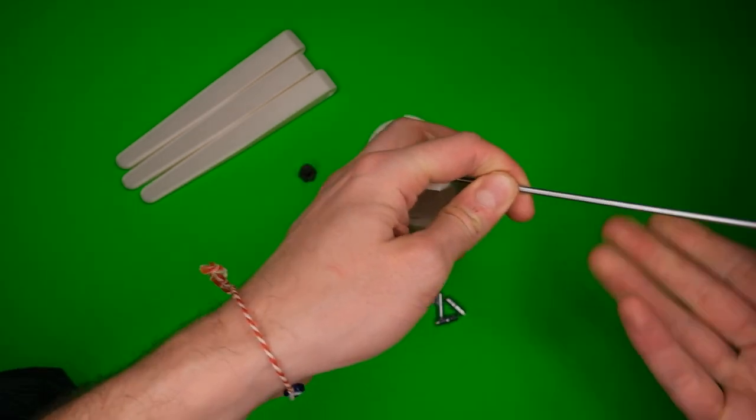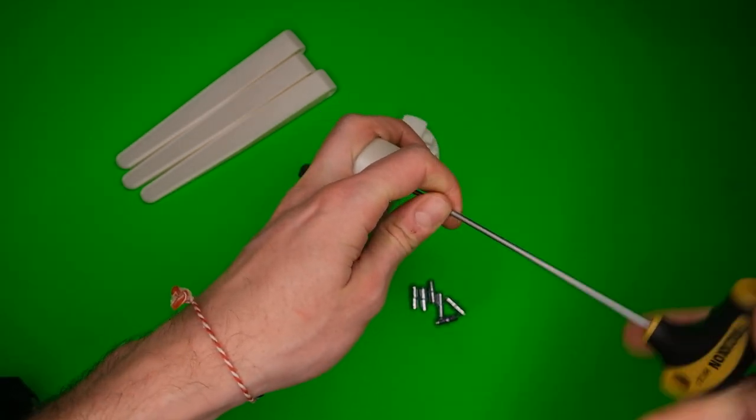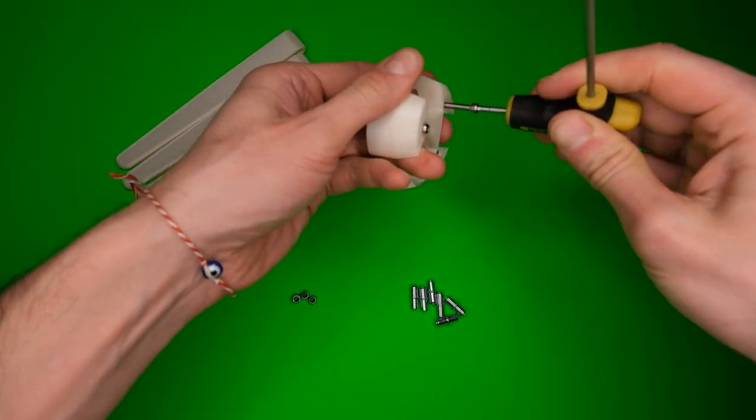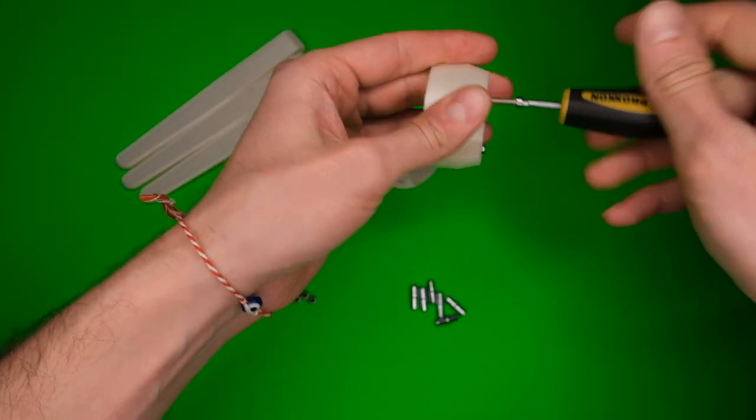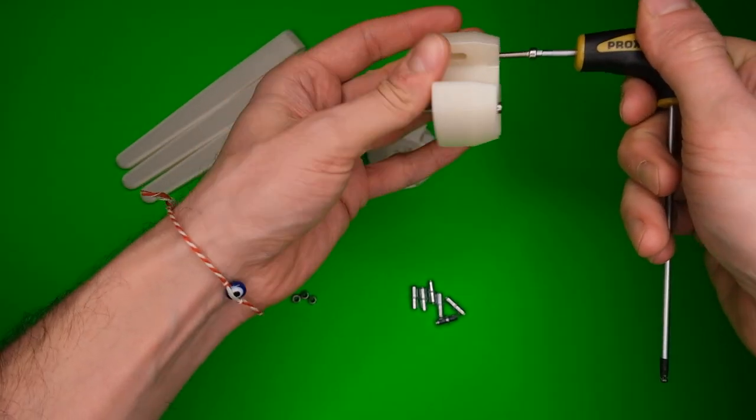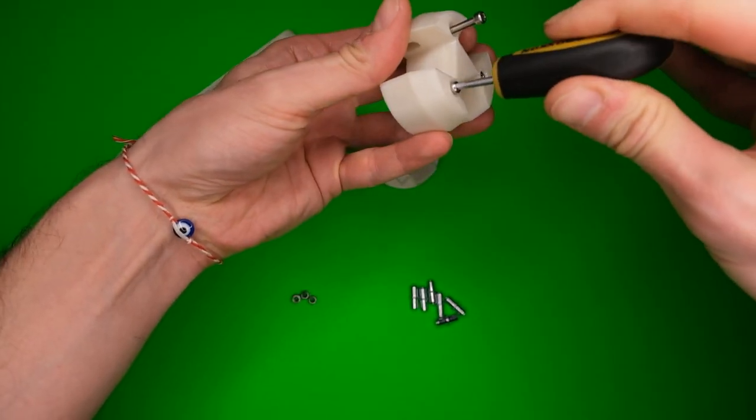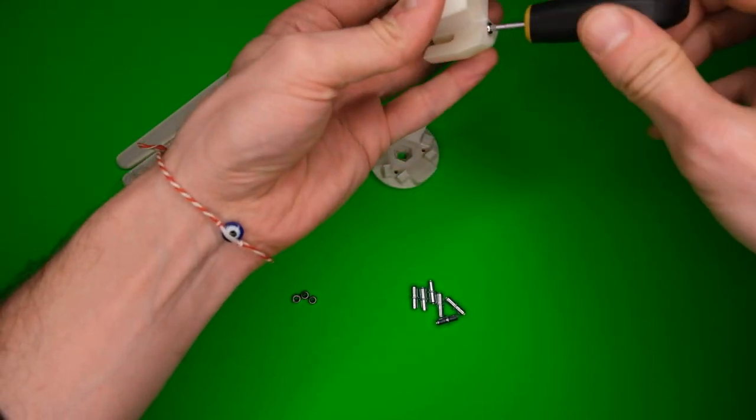Sometimes the holes are a little bit tight and if you've got a reamer you can just size them up correctly. This could be just a little bit debris. Maybe these screws are slightly bent, I don't know.